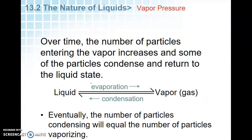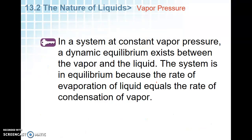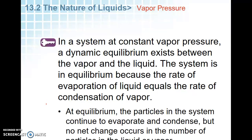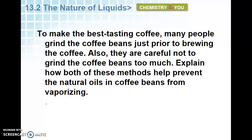Over time, particles enter the vapor phase and some return back to liquid. We get a constant equilibrium where liquid evaporates to vapor and vapor condenses back to liquid. Soon the number of particles condensing equals the number vaporizing. When we have constant vapor pressure, this is dynamic equilibrium — things are switching from vapor to liquid and liquid to vapor, but the numbers stay the same. The rate of evaporation equals the rate of condensation at equilibrium, and no net change occurs.